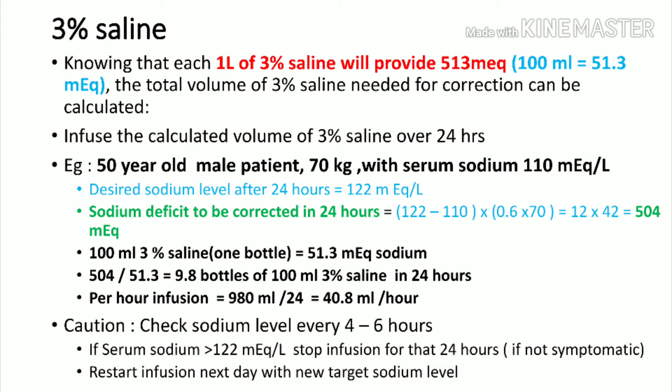Three percent saline is reserved for severely symptomatic patients or those not correcting with normal saline. One liter of 3% saline provides 513 milliequivalents of sodium; 100 ml provides 51.3 milliequivalents. Example: a 50-year-old male, 70 kg, with serum sodium of 110 milliequivalents per liter, slightly drowsy and not fluid overloaded. The desired correction target for 24 hours must be calculated carefully.